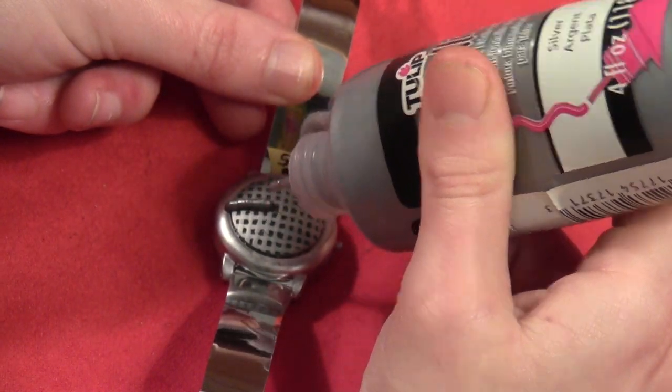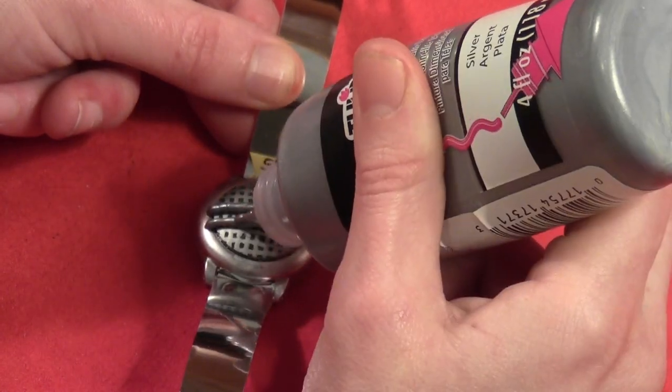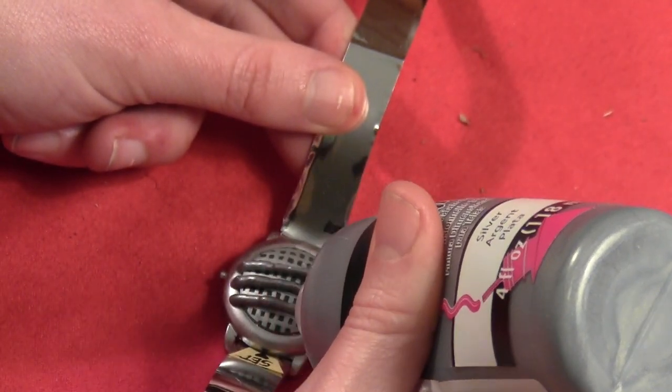So then I took some metallic silver puffy paint and drew the three lines across the middle. Mine are unfortunately slightly crooked so just pay attention when you're doing it and make them a little bit straighter than mine.